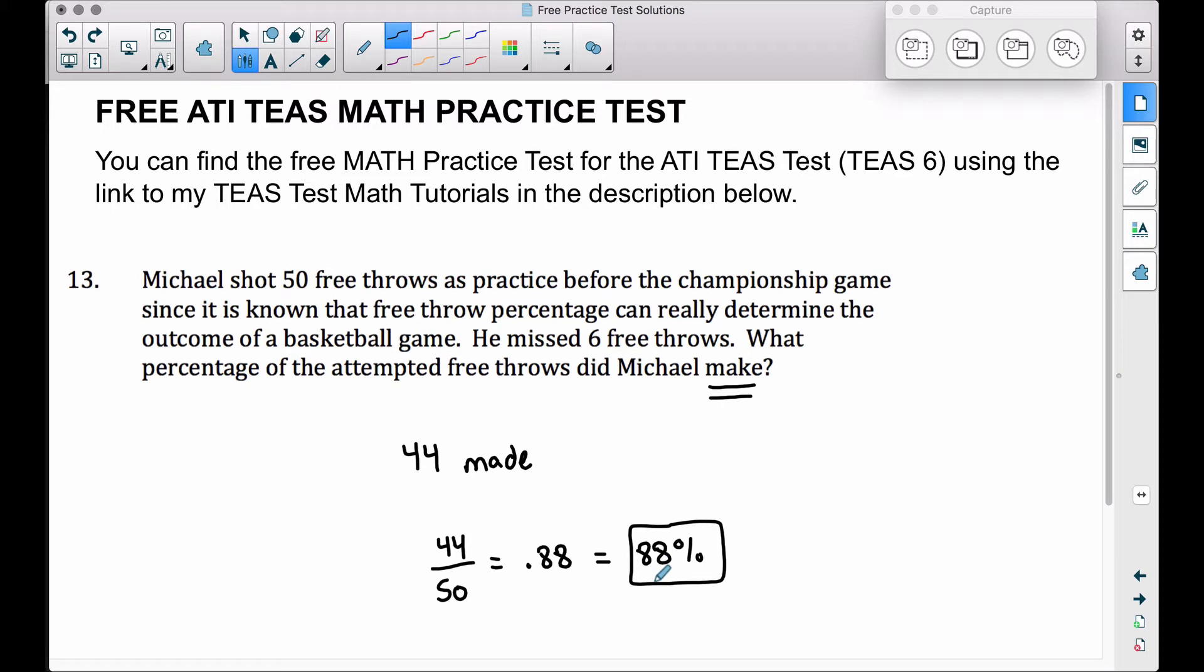And converting that decimal to a percent - two ways to do that: move your decimal two places to the right. D2P, you've probably heard me mention that in several of my videos now, or you can multiply this decimal by 100 to get 88%. Either way works. Now what's the other way to look at this? Well, again, you have to be careful when you read this - he missed six, but we're trying to find the percentage of the shots that he made.